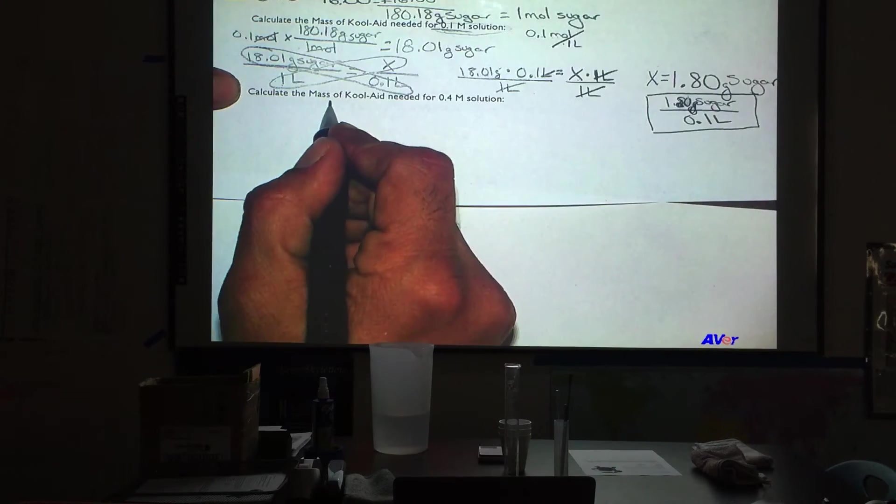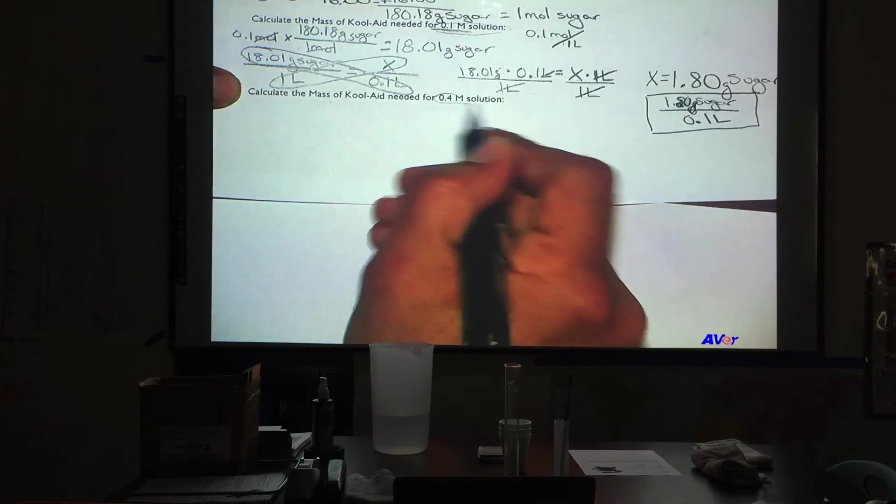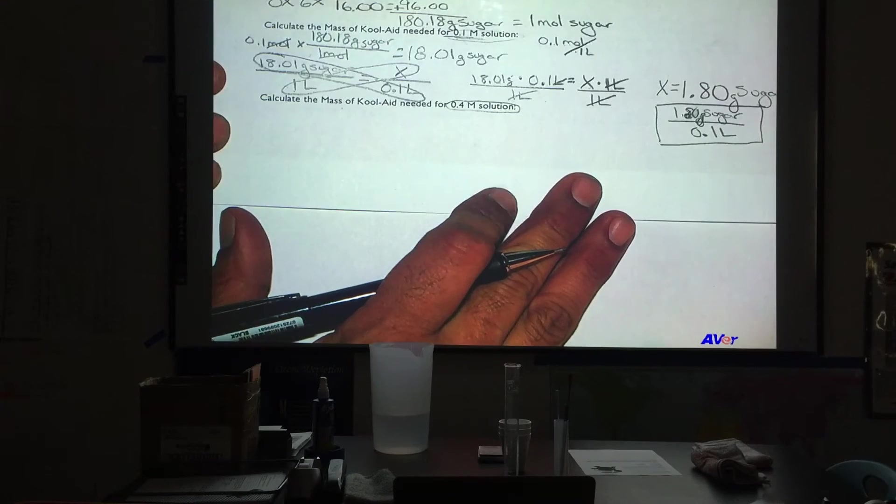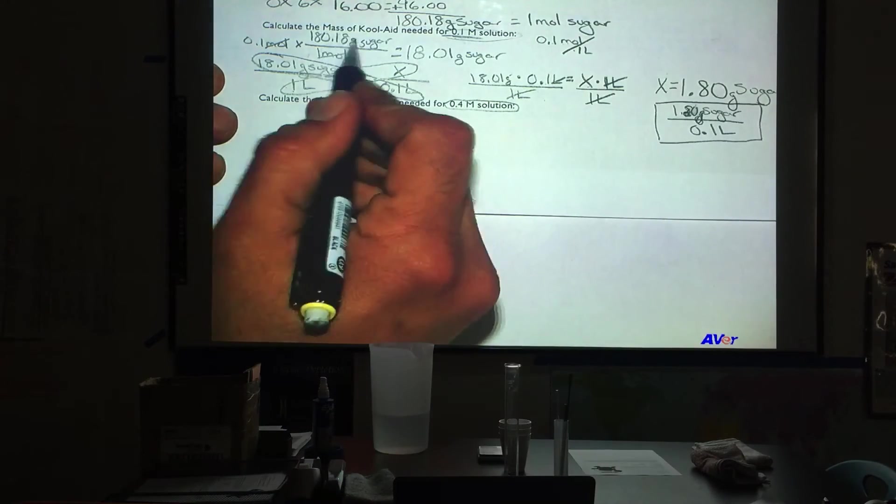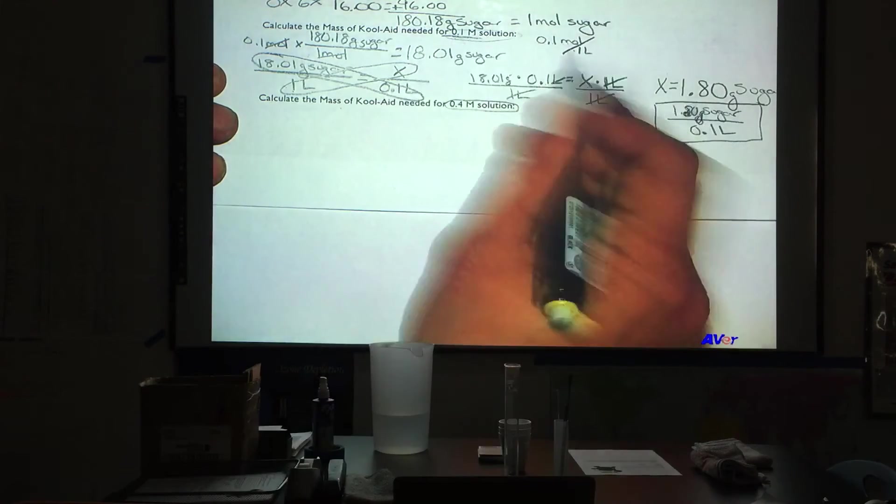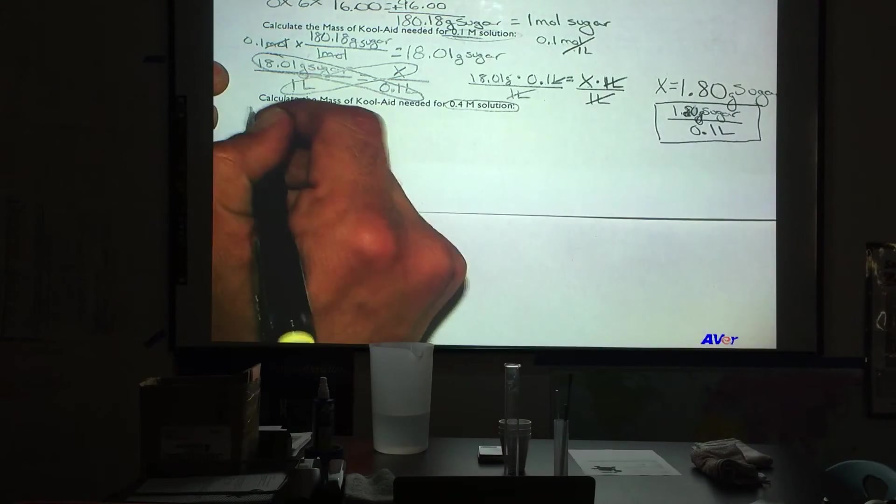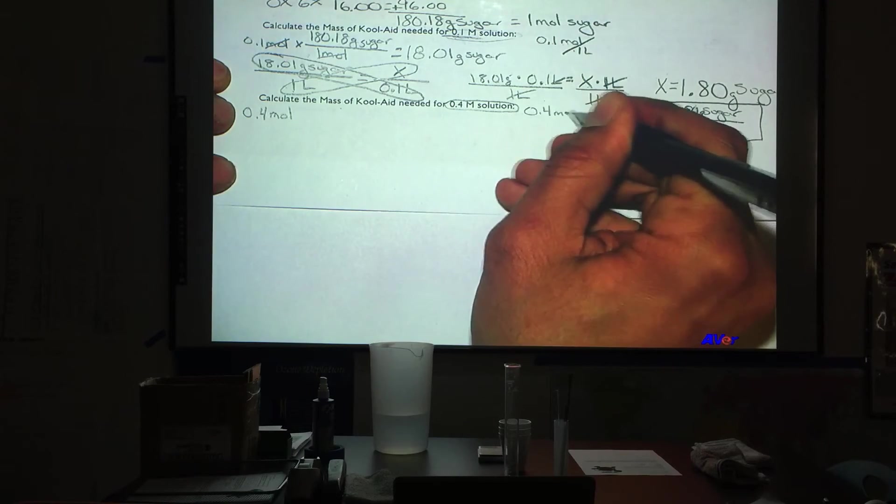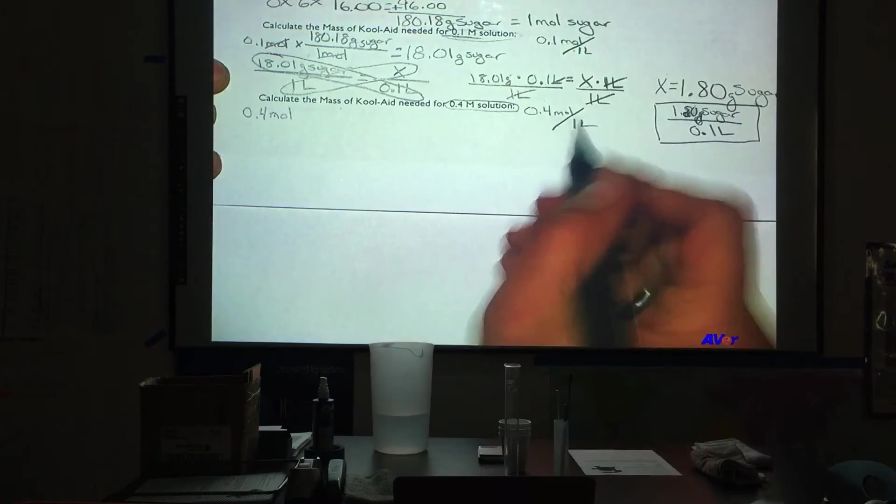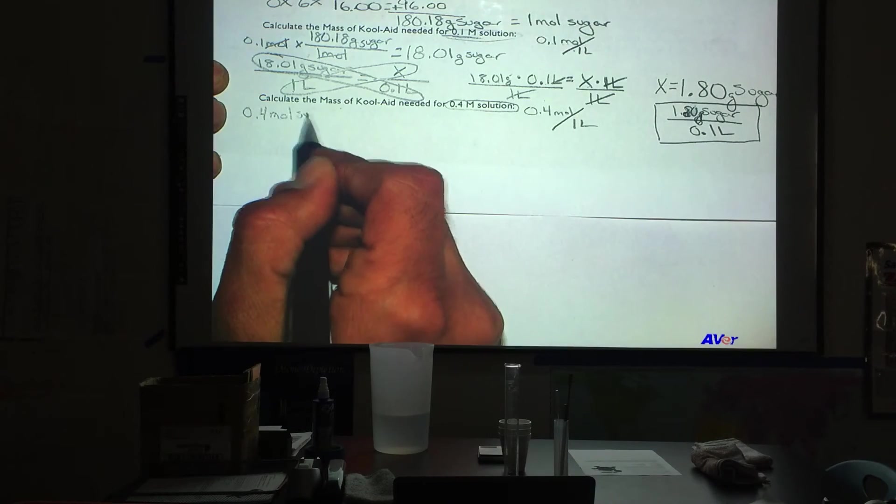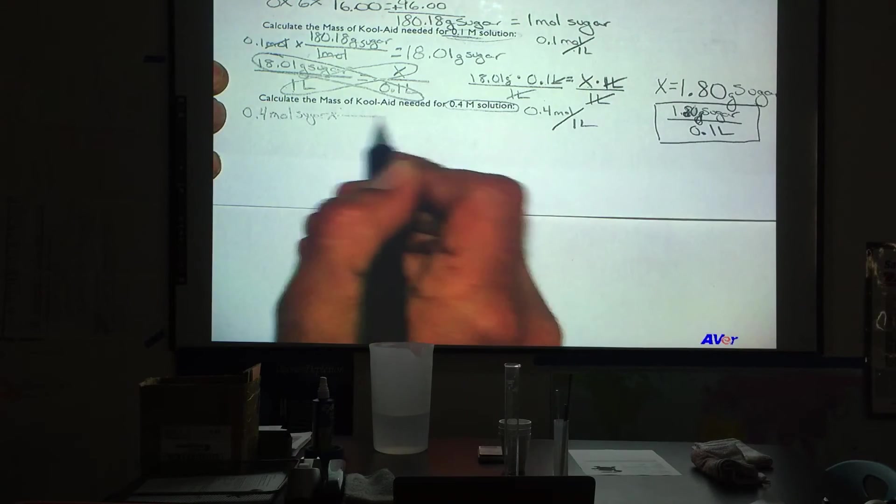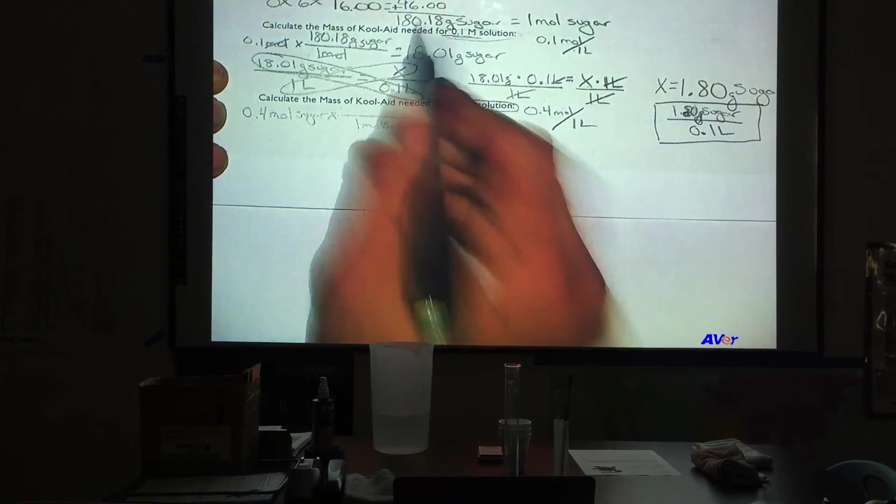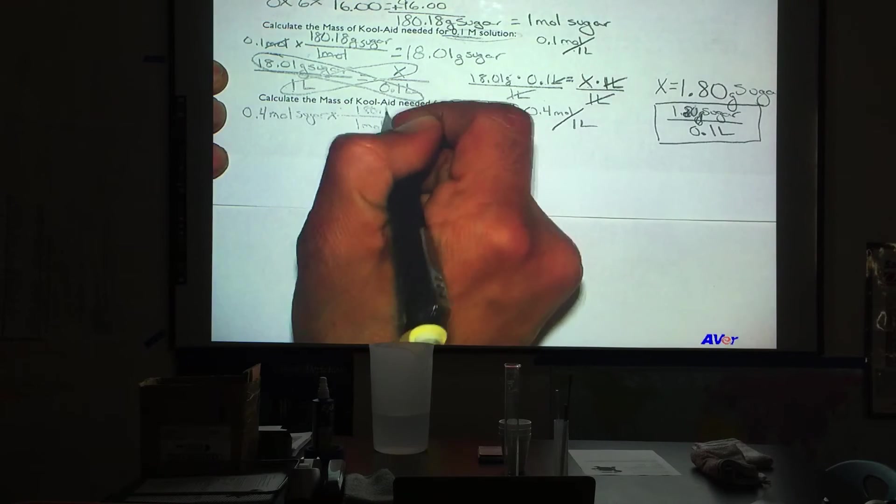In the next question, we are going to go with a 0.4 molar solution. That means we have more moles than we had last time. So I want you to set up your problems just as you did before. It is almost exactly the same. The only thing different is we are going to use, instead of 0.1 moles, we are going to use 0.4 moles. 0.4 moles sugar. We want to get away from moles. We are going to use the same conversion factor. 1 mole sugar weighs 180.18 grams of sugar.